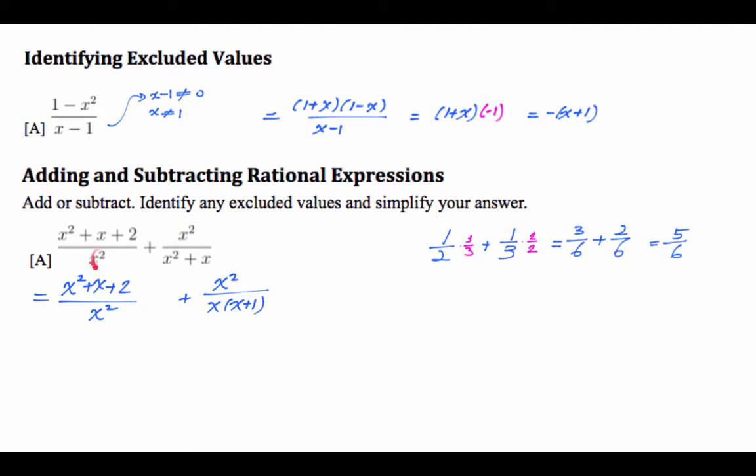So x squared already is in a factored form. It's x squared, and the right-hand side is x times x plus 1. So what would you have to do to make these two identical? In the first one, we would need x plus 1. In the second one, we would need x.